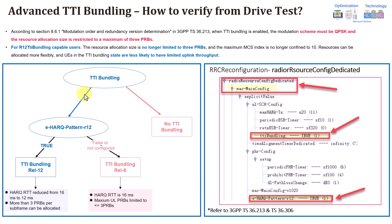If TTI bundling is triggered, the eNB checks the UE's capability — whether it supports Enhanced HARQ Pattern Release 12. If not supported, the user follows the old process: HARQ RTT is 16 ms and maximum uplink PRBs are limited to 3. If the capability is supported and the feature parameter is enabled (check with your vendor), then Advanced TTI bundling Release 12 applies: HARQ RTT reduces from 16 to 12 ms and more than 3 resource blocks become available for uplink.